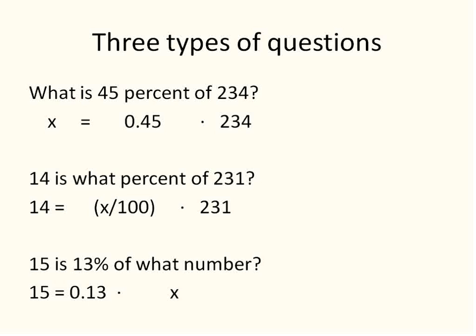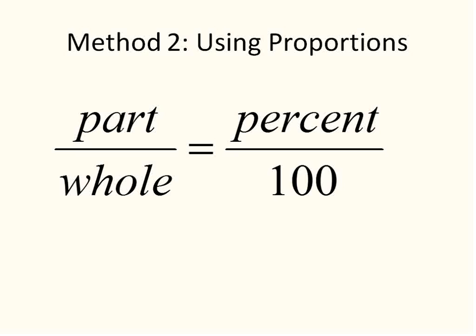So the advantage of this type of solving is that you'll be able to translate each sentence exactly word for word into what it is you're looking for. The challenge with this is that each time you're going to be solving in a different way. For this one, this is the easiest type, you just multiply them. For this one here, you're going to have to divide both sides by 231 and then multiply each side times 100 to isolate our variable. For this one here, you would be dividing both sides by that percentage. So each one of those is fine, and each one of them will work, but they're different for each one.